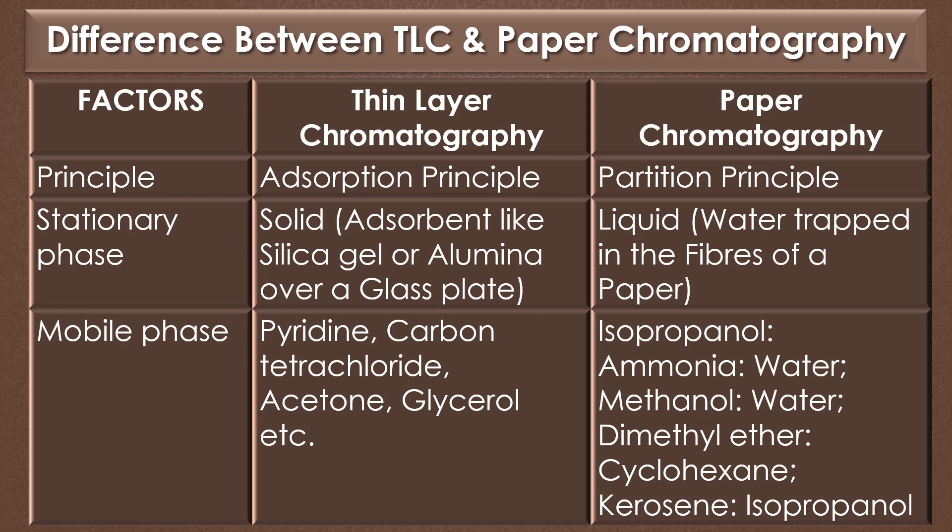For paper chromatography, the mobile phases are used in different combinations like isopropanol-ammonia-water combination, methanol-water combination, dimethyl ether-cyclohexane combination, and acetic acid-isopropanol combination.